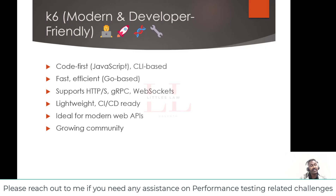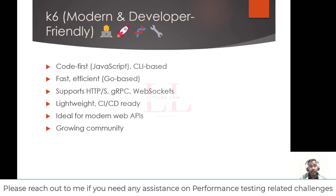K6 uses pure JavaScript — so if you're a web developer, you already know it, making test writing fast and expressive. For protocol support, K6 primarily focuses on modern web protocols: HTTP, HTTPS, WebSockets, and gRPC. The drawback is it has less broad protocol support than JMeter, making it less ideal for legacy systems or very diverse protocol needs. K6 is built with Go, making it very lightweight and efficient in terms of system resources — great for running tests in CI/CD pipelines or limited infrastructure.